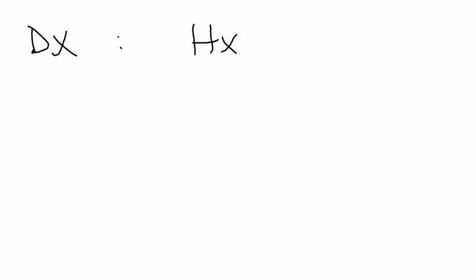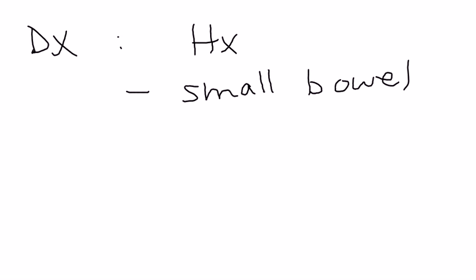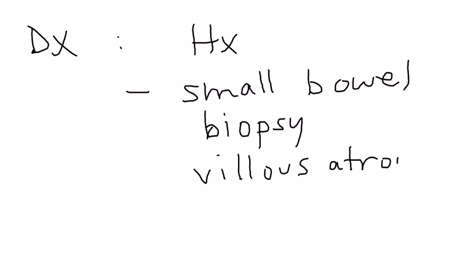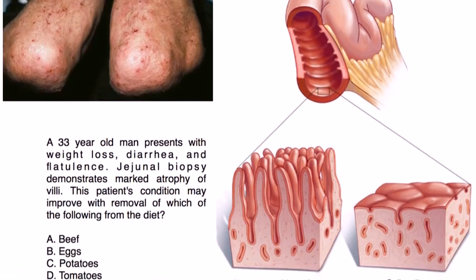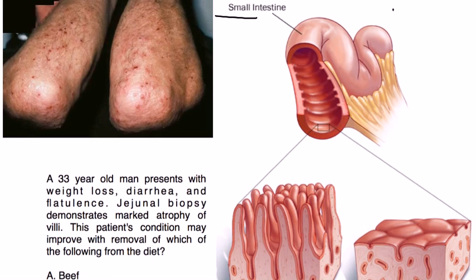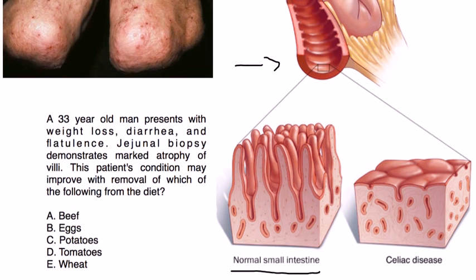The diagnosis of celiac disease, beyond the history, is accomplished by doing a small bowel biopsy. What you're really looking for in the biopsy sample is villus atrophy, which can be detected under a microscope. Here is the small intestine blown up: in the normal intestine you can see those tall villi — they look like fingers — responsible for absorption. In celiac disease, you can clearly see those villi have flattened out. That is villus atrophy.